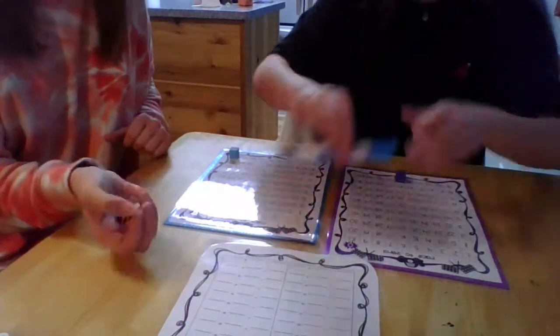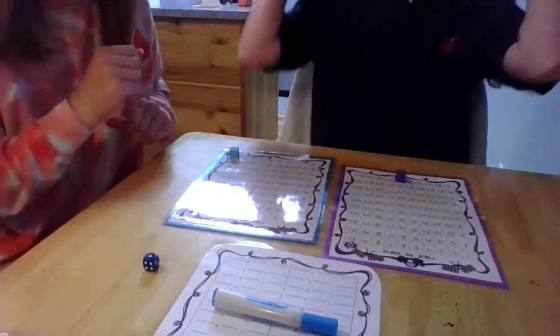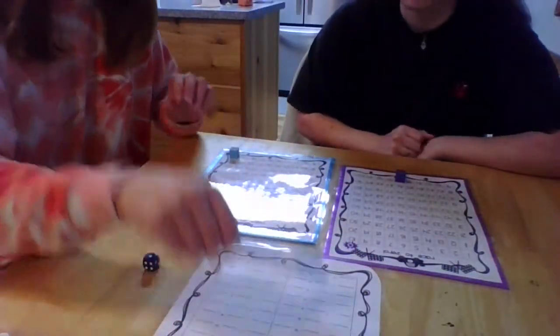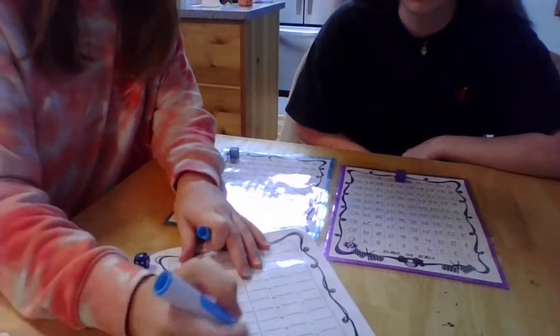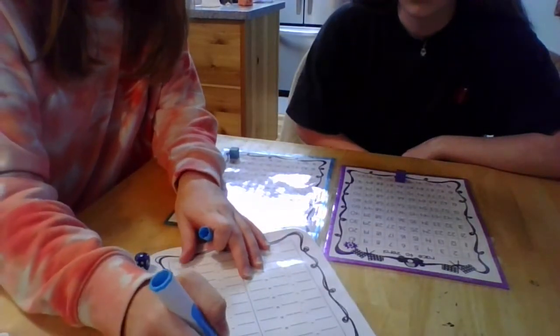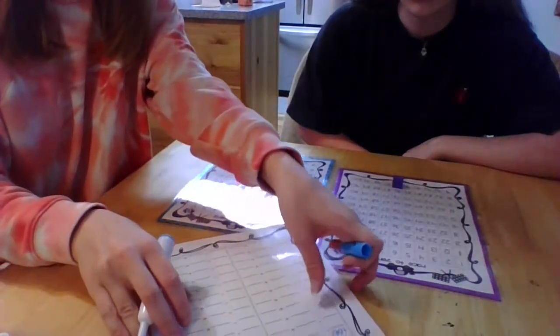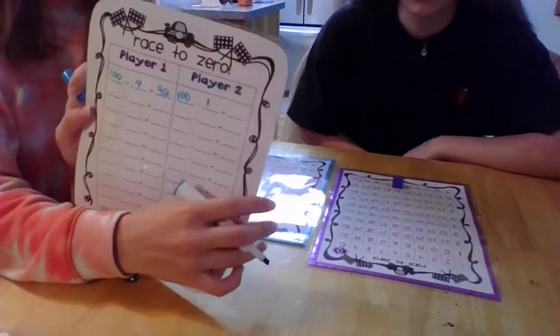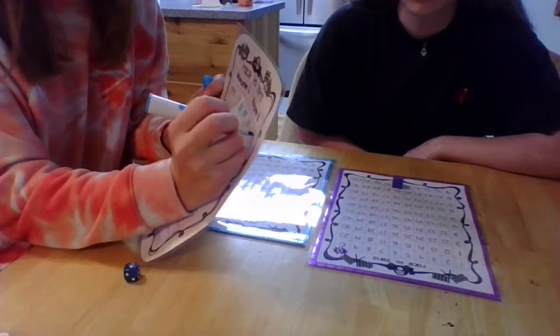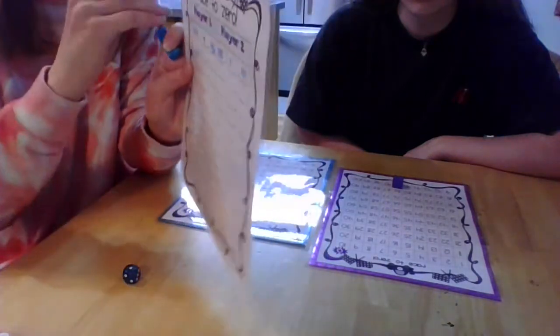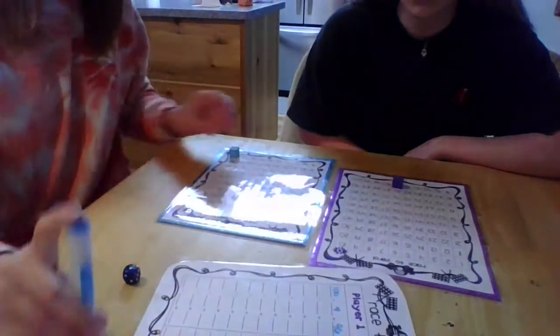And then I'll take my turn. Oh I only got a 1. So 100 minus 1 equals 99. So that's where I put my piece.